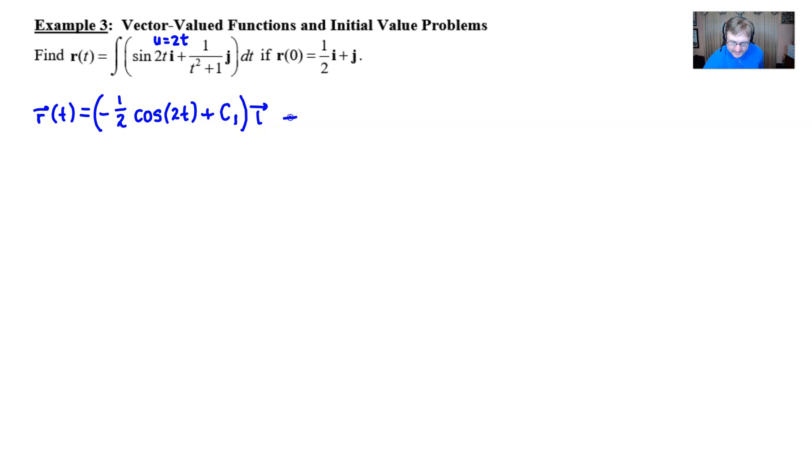Next up, you go to the next piece. Now this one probably should be a little easier to integrate as long as we remember the formula, and that is that the integration of 1 over t squared plus 1 is the arctan or inverse tan of t and then plus our constant c2. Don't forget your vector component there of j.